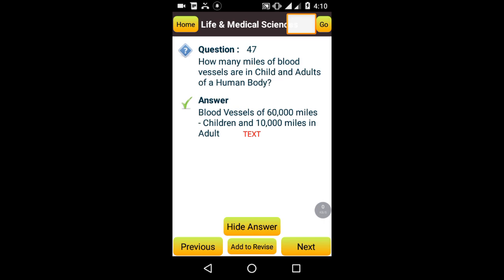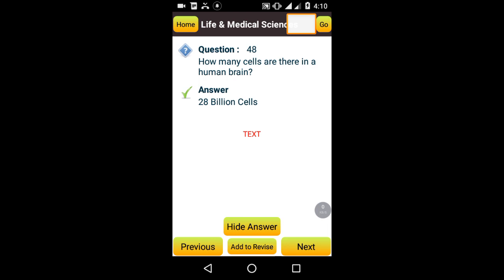How many miles of blood vessels are in child and adult of human body? Blood vessels of 60,000 miles in children and 100,000 miles in adults. How many cells are there in human brain? 28 billion cells.